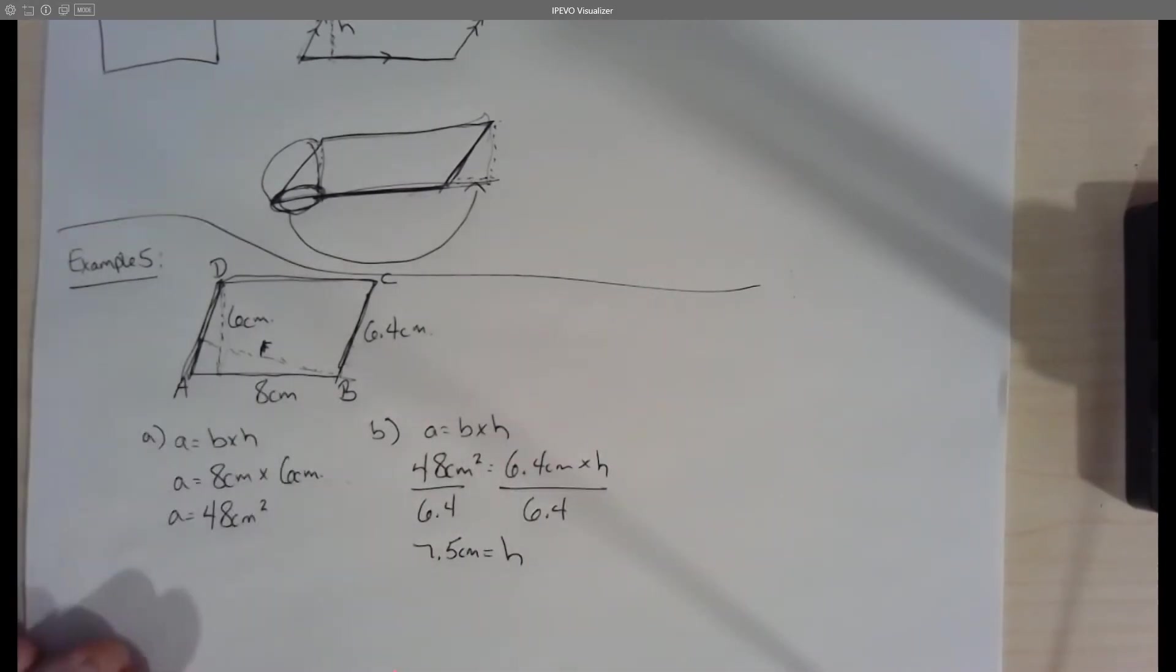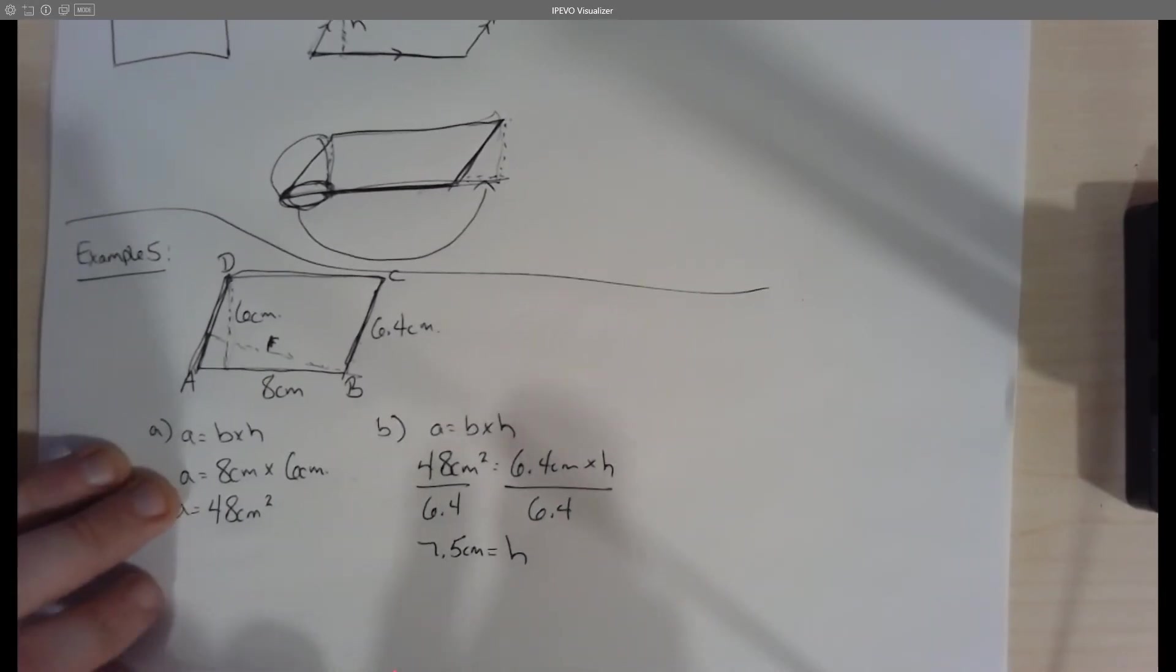So that would be how we would figure out line F in that particular question. You're going to be doing the same thing in try it 5 as well. All right, let's take a look at the next part here. Let's take a look at example six now.